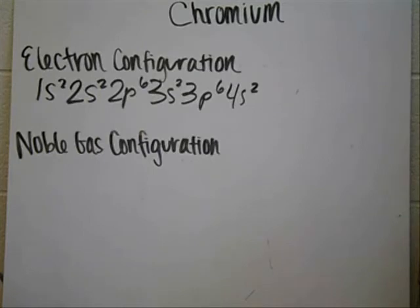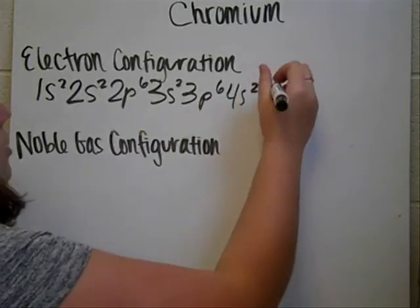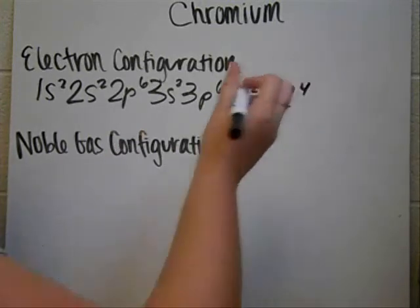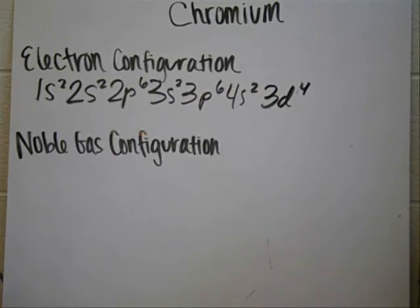And so you count over how many chromium is, and you see that it's 4, so then you go 3d4. And something weird about the transition metals is that it jumps down to 3. So they start at 3, and then they go up for it. Even though they're at the 4 line with the s and p orbitals, they start at 3.